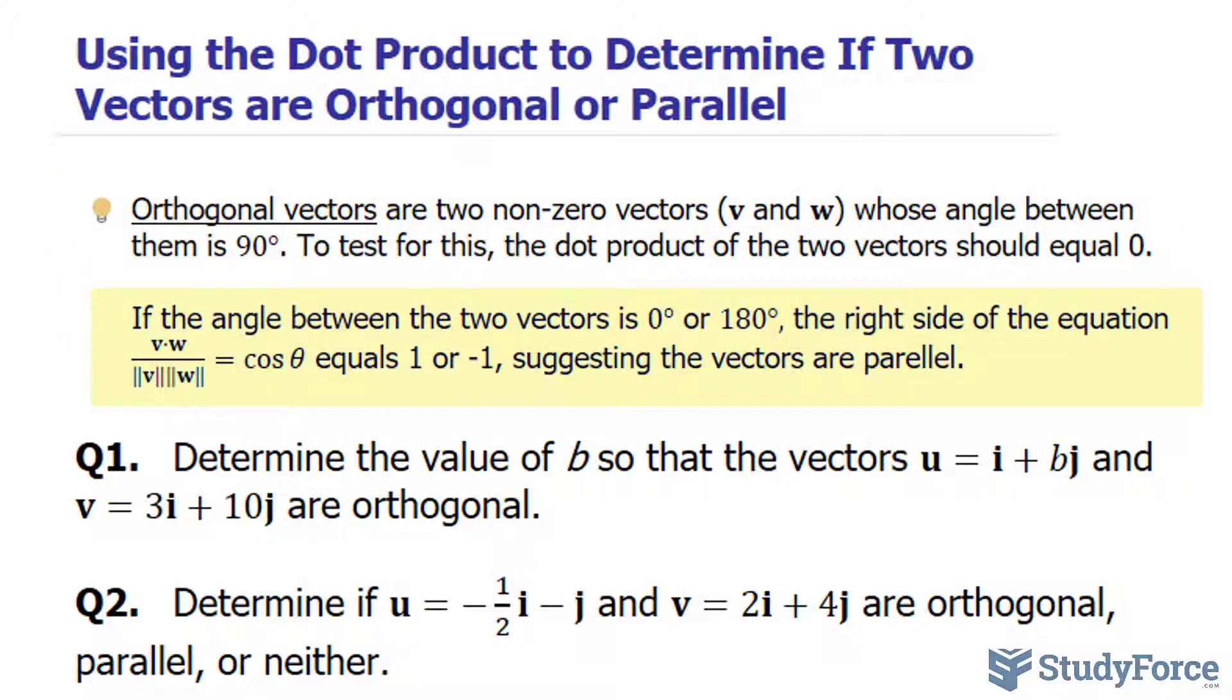In addition, if the angle between the two vectors is either zero degrees or 180 degrees, the right side of the equation shown here equals one or negative one, suggesting that the vectors are parallel.